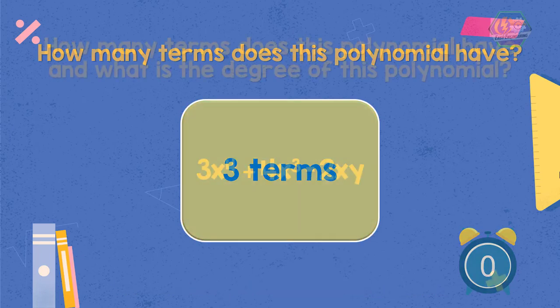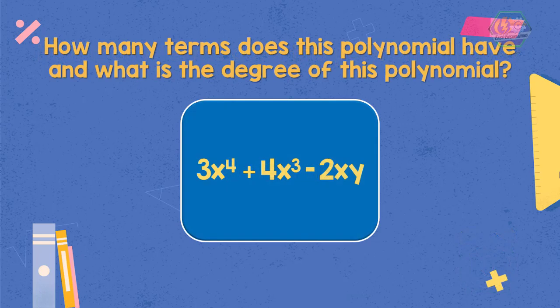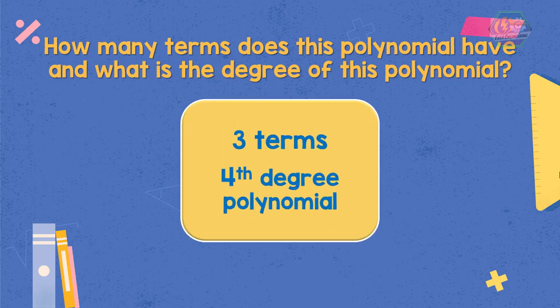Now, for the last problem. How many terms do this polynomial have? And what is the degree of this polynomial? 3x to the power of 4 plus 4x cubed minus 2xy. Yes, well done! The polynomial has 3 terms, and it is a fourth degree polynomial.